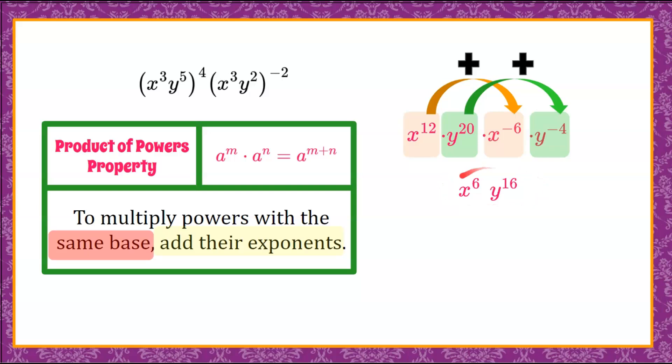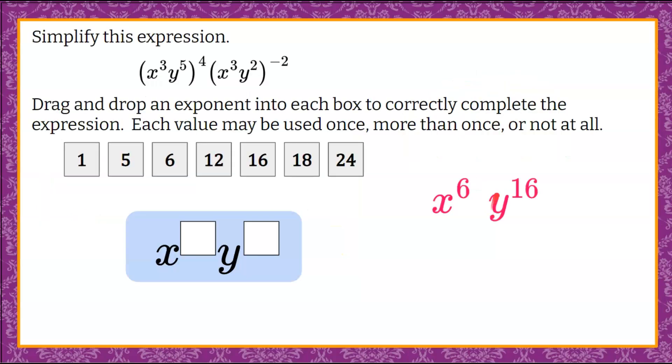So now this expression is in simplest form because we do not have any like bases left. We don't have any negative exponents, so this is as simplified as we can go. Let's bring our simplified expression back to our question. We are going to fill this box with our exponent we found for x, which is 6. Our exponent for y that we found is 16. x to the 6th, y to the 16th is the simplified version of this expression.